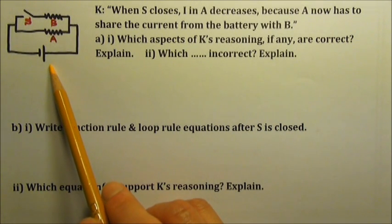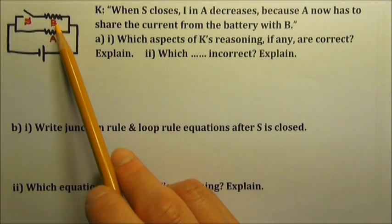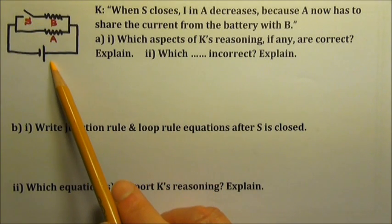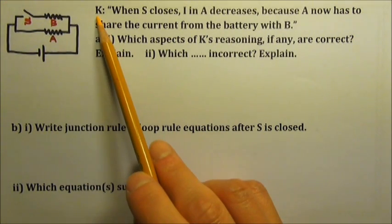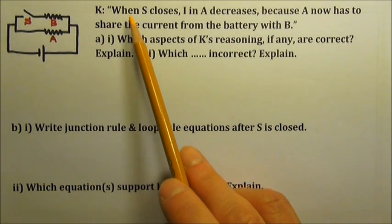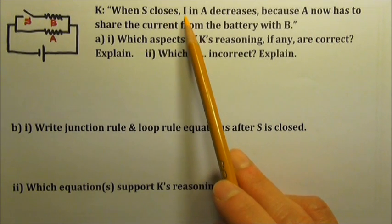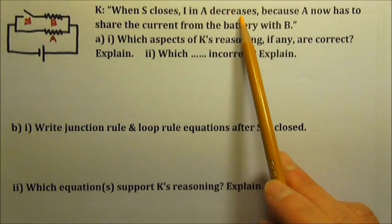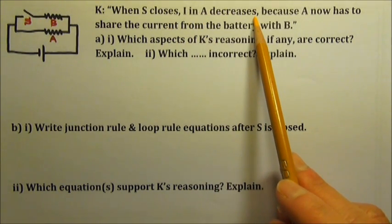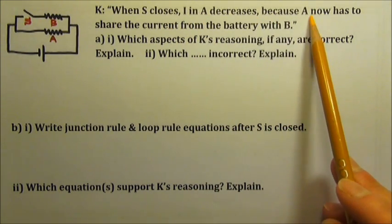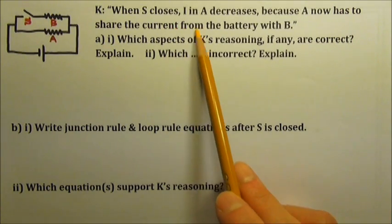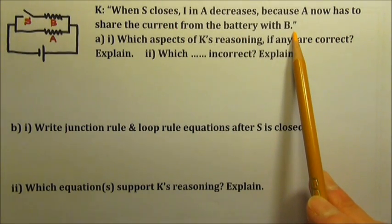In this circuit, there are two resistors, a switch, and an ideal battery. Student K says when the switch closes, the current in resistor A decreases because A now has to share the current from the battery with B.